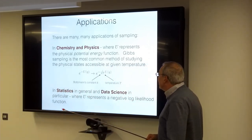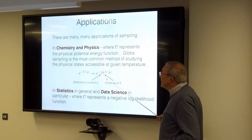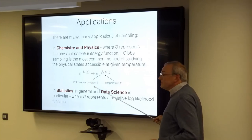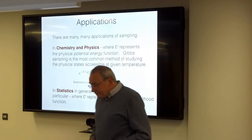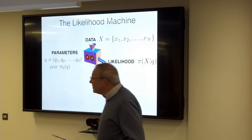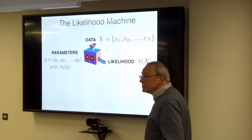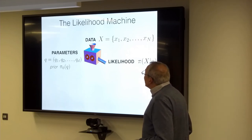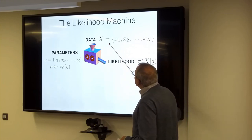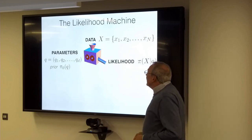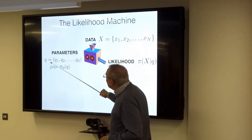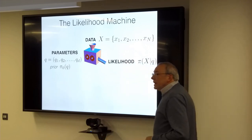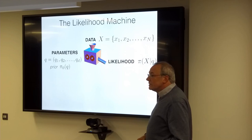Where are the applications? The most prevalent applications until recently were in chemistry and physics, but increasingly these problems arise in statistics, and a lot of statistical calculation is about sampling. I call this the 'likelihood machine.' You have data X1, X2, and so on, and you describe it by some distribution function with parameters Q1, Q2, up to QD, plus a prior distribution that localizes them. Then you define a likelihood function — the likelihood of the data given certain parameter values.